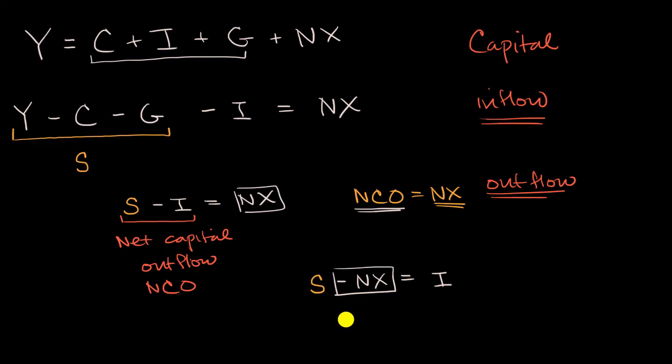So we could set up another equation, and these are all fairly straightforward algebra, but they give us a little bit of intuition of how to think about these different levers. So we could say savings plus net capital inflow is equal to investment. And think about why this makes sense.